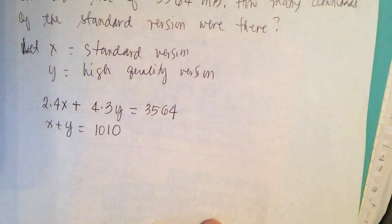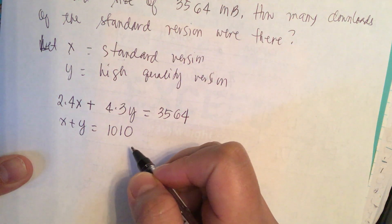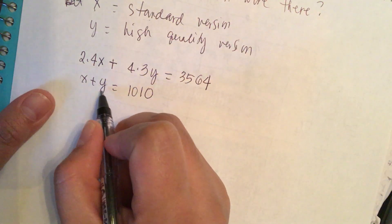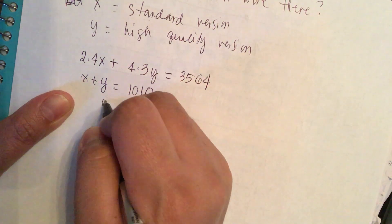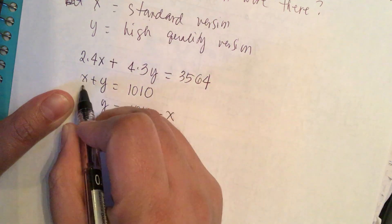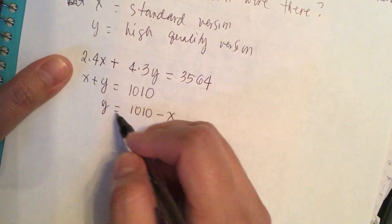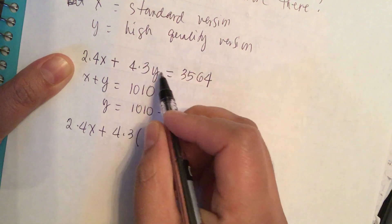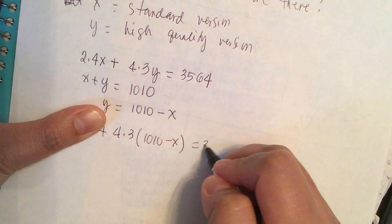So we solve this system of two simultaneous equations. We can solve the second equation for y — it's easier — then do substitution. So y is equal to 1010 minus x. We substitute this into the first equation: 2.4x plus 4.3 times (1010 minus x) is equal to 3564.